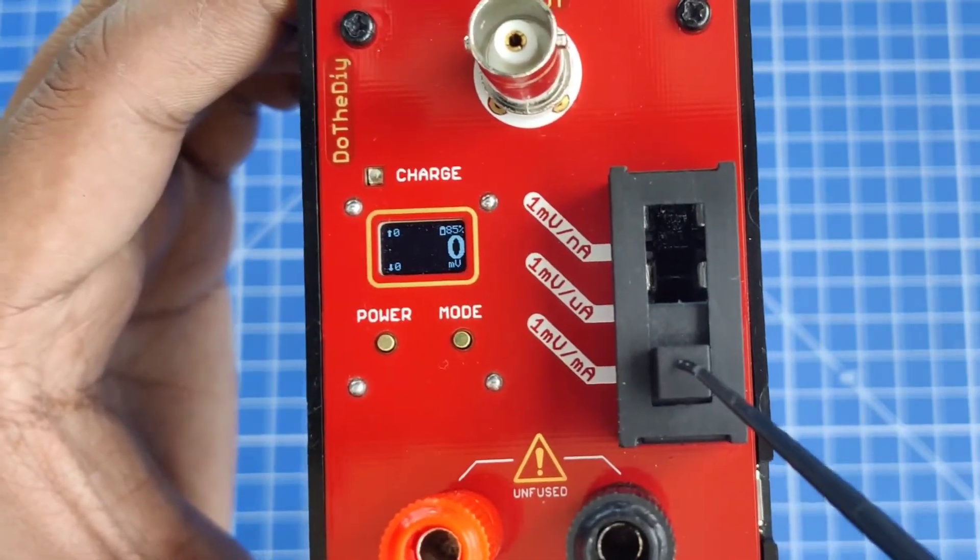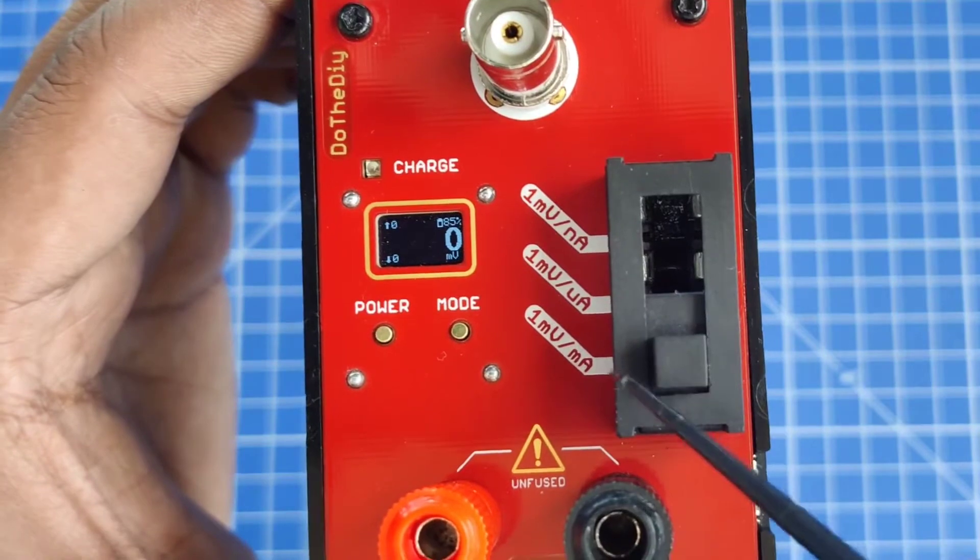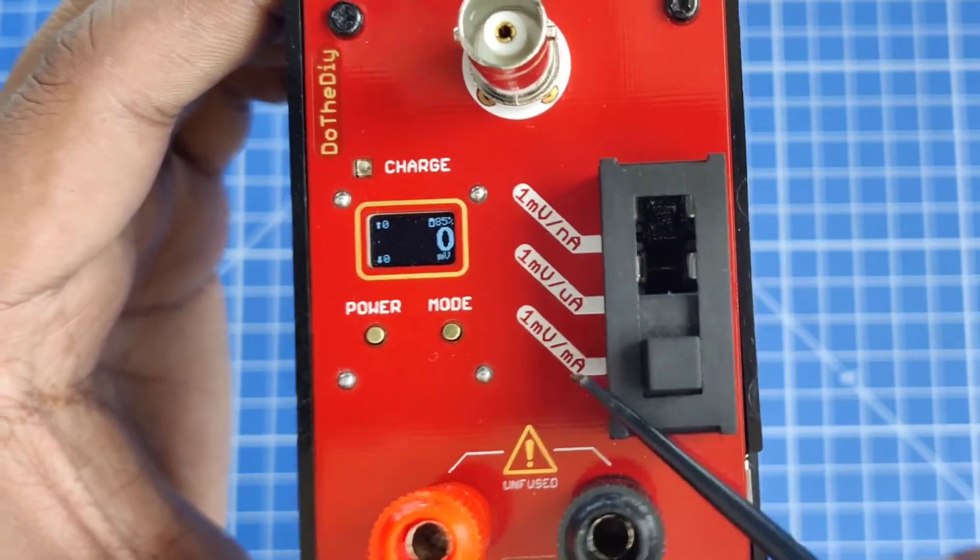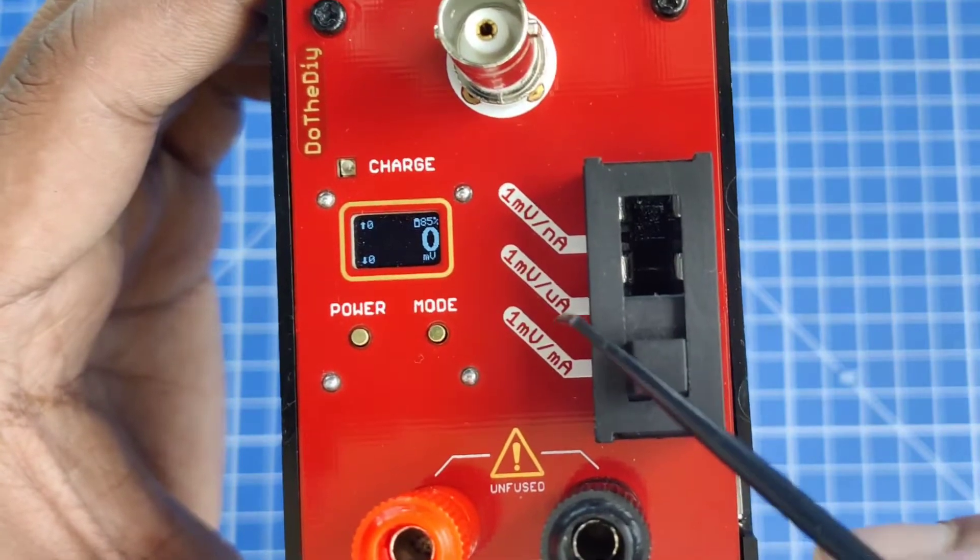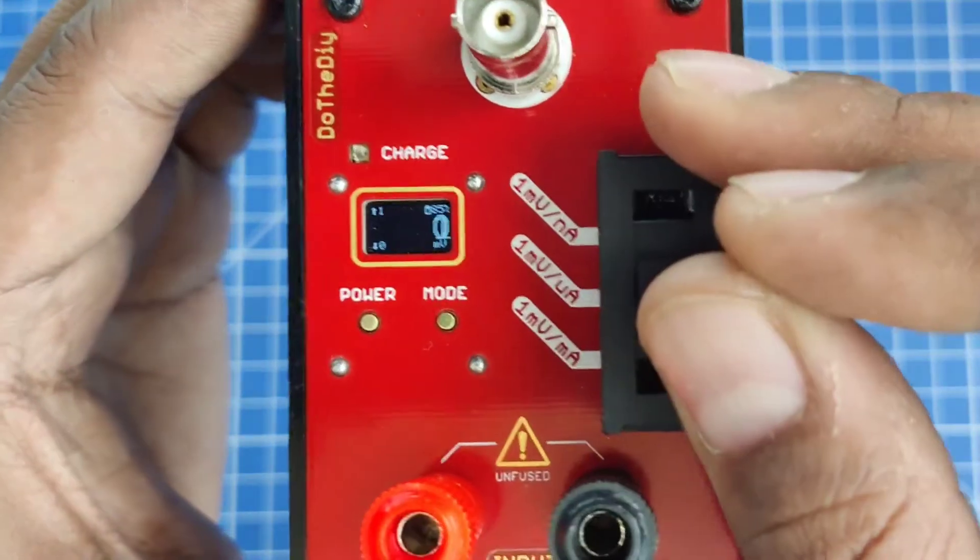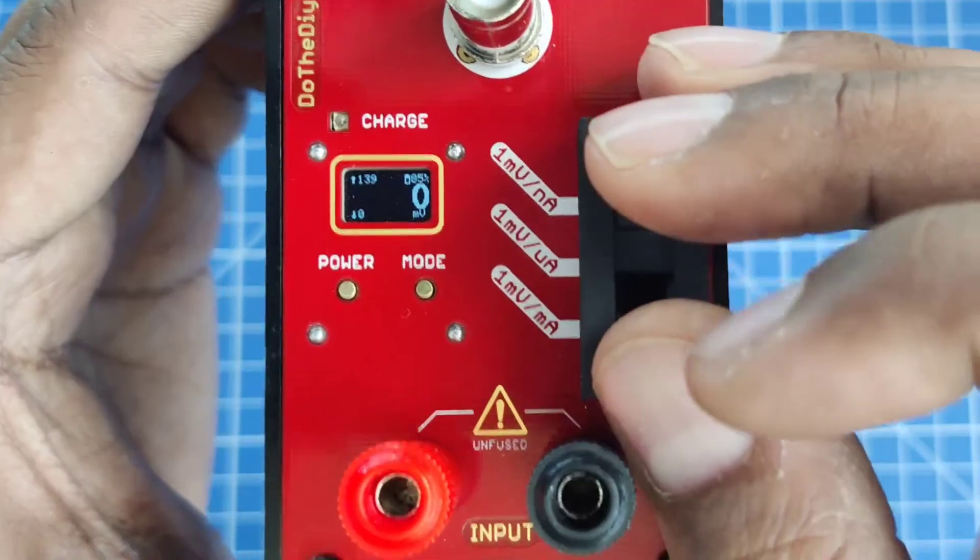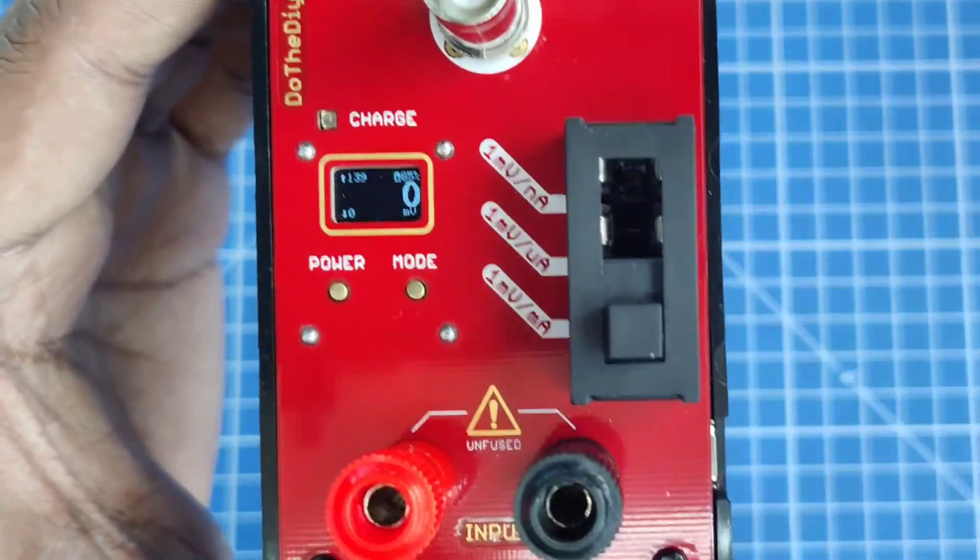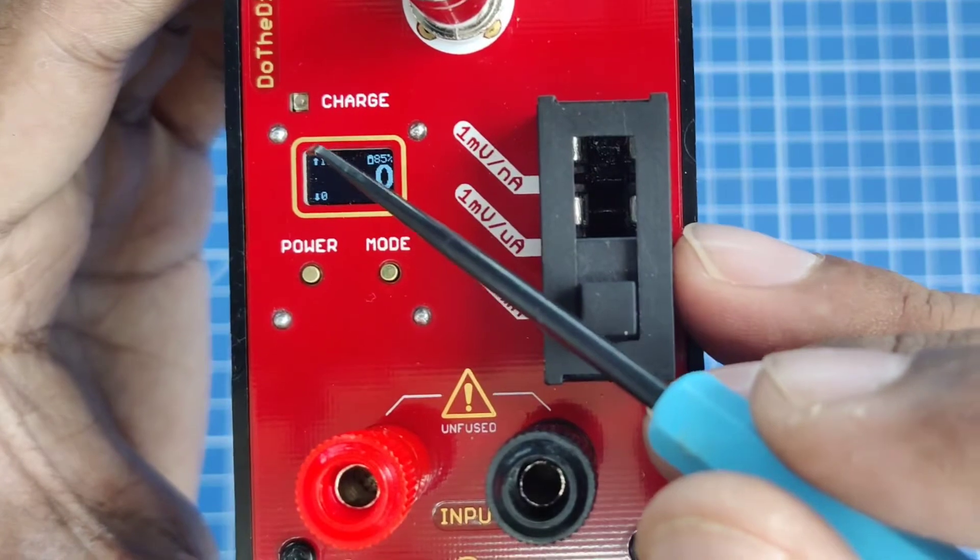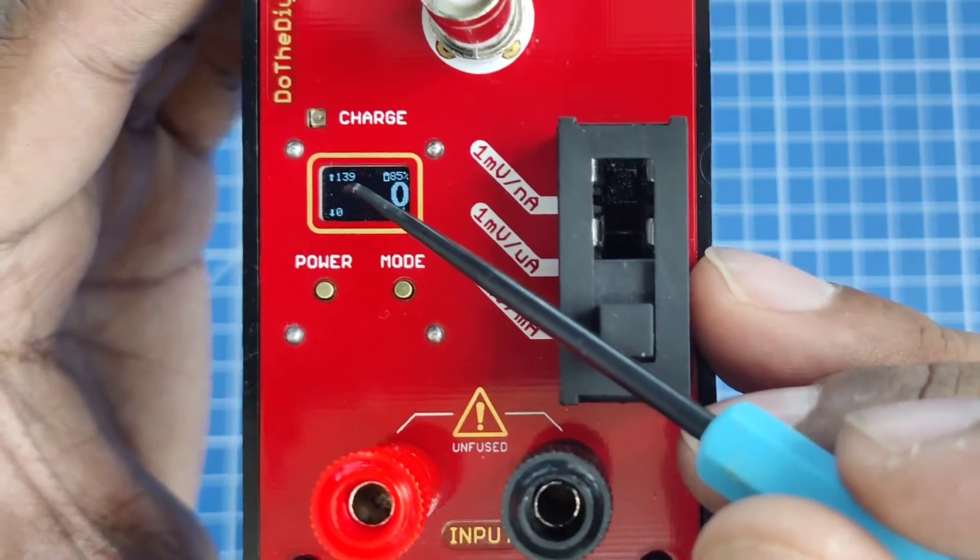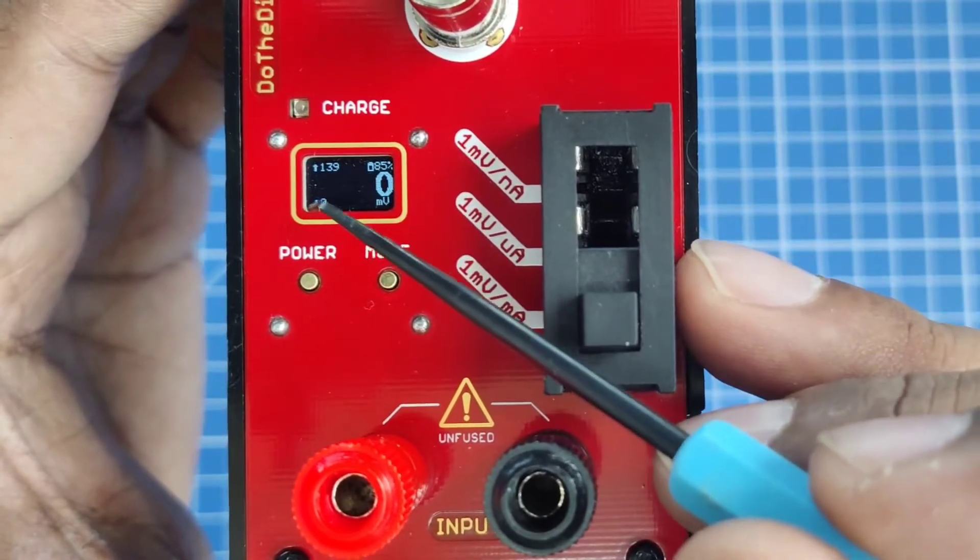Currently it's showing milliamps consumed. Similarly, if it's on microamp it will show microamp, and if it's on nanoamp it will show nanoamp. On the top corner it shows the maximum current that was consumed and on bottom it shows the minimum.